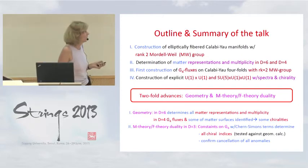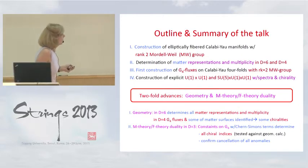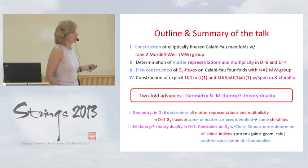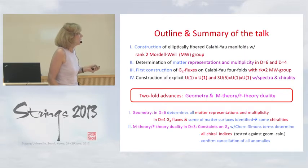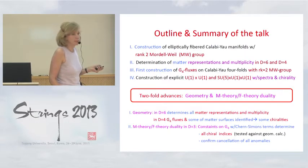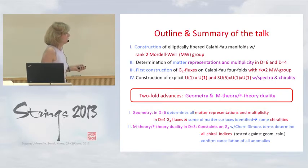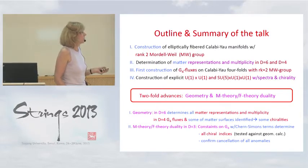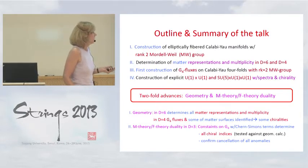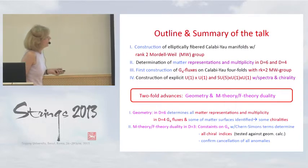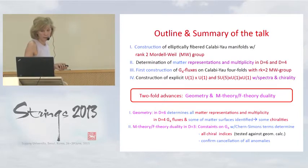From the geometric point of view, what we found is that geometry for six-dimensional compactifications completely determines the matter spectrum — namely the matter representations and multiplicity. In four dimensions, it allows us to study G4 fluxes and also determine, to some extent, matter surfaces, which allow us to identify the chiralities of the corresponding matter representations.